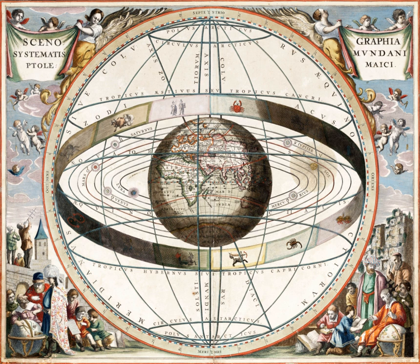Ptolemaic system, replaced by Nicolaus Copernicus' heliocentric model.